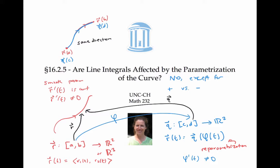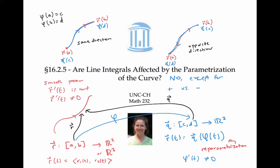On the other hand, we could have two parameterizations that go in opposite directions. In this case, r starts down here — so this point is r(a) and r ends here at r(b) — but q starts up here, so this is q(c), and the point down here is q(d). In the same-direction situation, we have that φ(a) = c and φ(b) = d. This follows from the picture where r(a) = q(c) and the reparameterization formula.